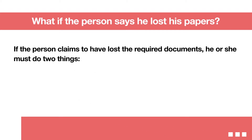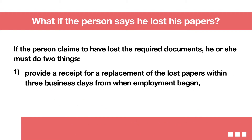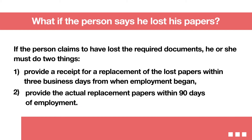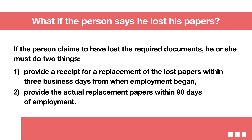What if the person says he lost his papers? If the person claims to have lost the required documents, he or she must do two things. One, provide a receipt for a replacement of the lost papers within three business days from when employment began. And two, provide the actual replacement papers within 90 days of employment.